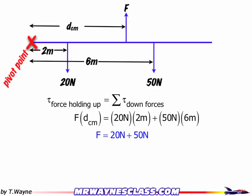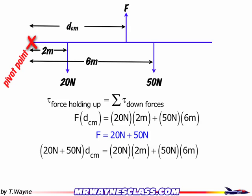Now the force that's holding it up, that's equal to all the weight going down. So in this case, it's just 20 plus 50. So that means that 20 plus 50 times the distance to the center of mass is equal to the sum of the other two torques. So I do a little bit of math, and I find the distance to the center of mass is 4.86 meters from the left end of the beam in this case.